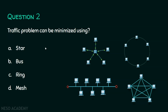First, we will check whether there is a traffic problem in star topology. In star topology, all nodes are going to send traffic or data to the central hub, so obviously traffic is high at the central node — star topology is not the answer. Coming to the bus topology, all nodes are going to use the common transmission medium, and it is bidirectional communication too, so traffic problems exist in bus topology as well — this is also not the answer.